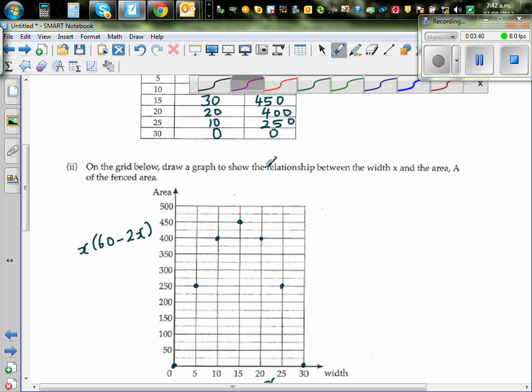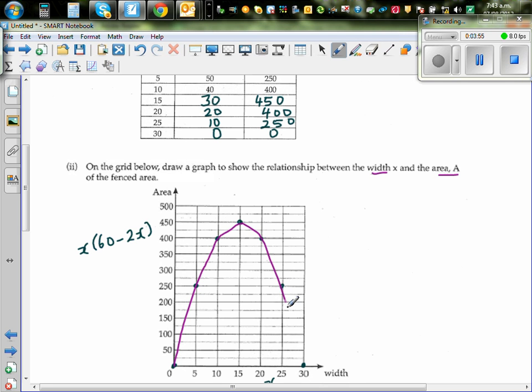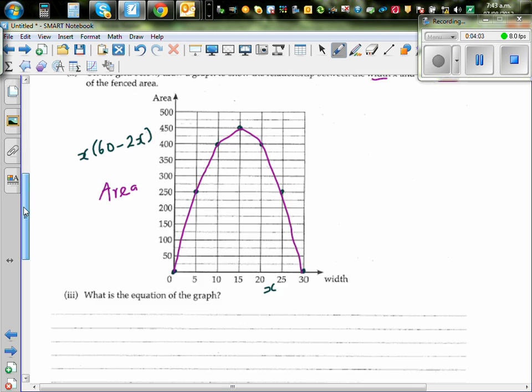On the grid below, draw the graph to show the relationship between width x and area A of the fenced area. If you draw the graph, it will be a parabola. You have to join the dots with a smooth curve. So this is the relationship between area and width.